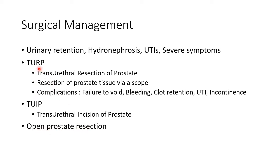Now let us see about TURP in detail. TURP stands for transurethral resection of prostate. In this procedure, we do resection of prostate tissue via a scope. The complications of TURP include failure to void, bleeding, clot retention, urinary tract infection, and incontinence. TUIP stands for transurethral incision of prostate.